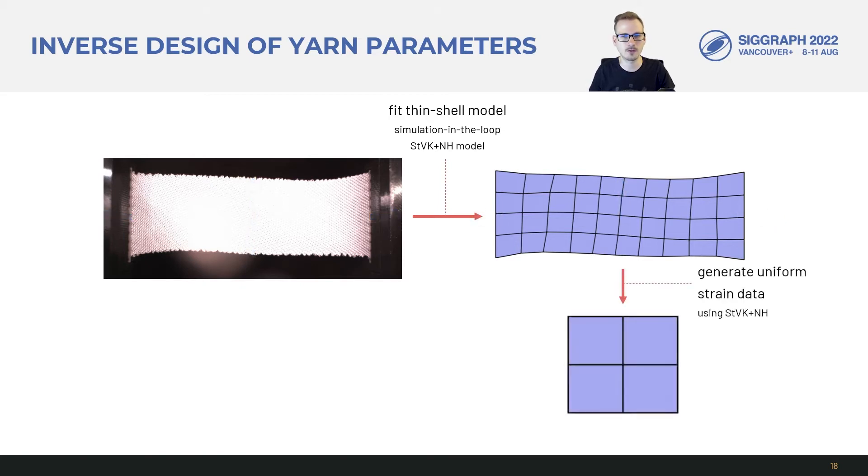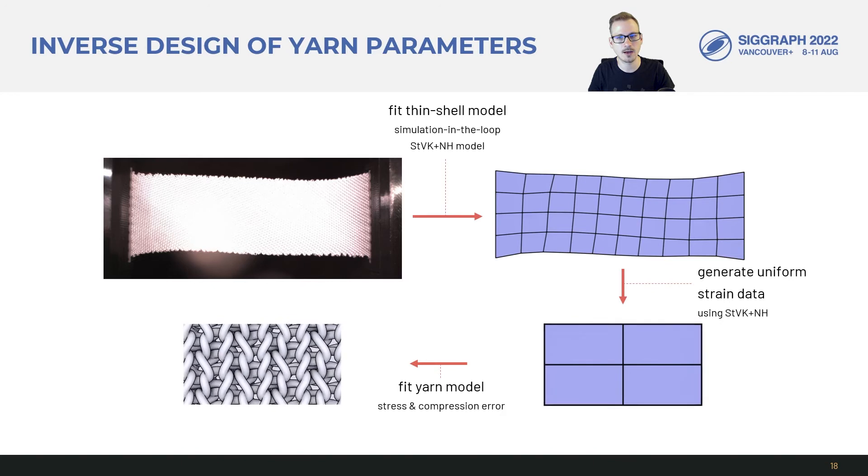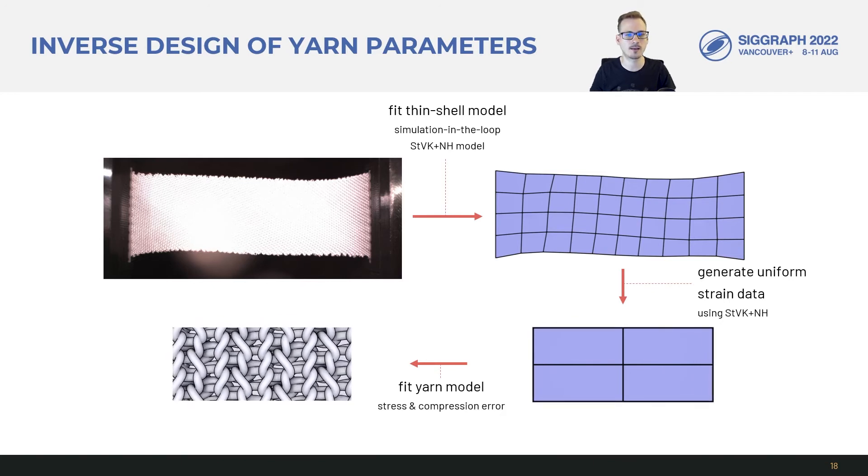Now we use the fitted thin-shell model to generate uniform strain data for the yarn fitting. We found it best to replicate the test setup with a free orthogonal boundary, meaning that we compare the thin-shell model and the homogenized yarn simulations at a certain stretch with respect to their stretching stress and optimal orthogonal strain.